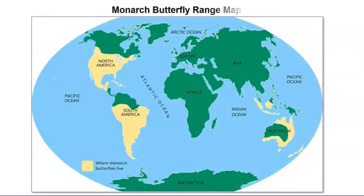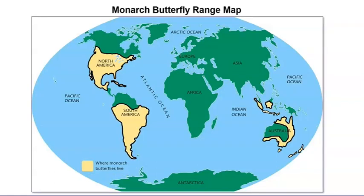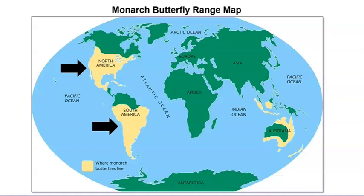Check out this map. This is a monarch butterfly range map that tells us where monarch butterflies live. Do you notice the key at the bottom? All the yellow areas on the map show where monarch butterflies live. I see that monarch butterflies live mostly in North America and South America. I also see that some monarchs can be found in and around Australia.